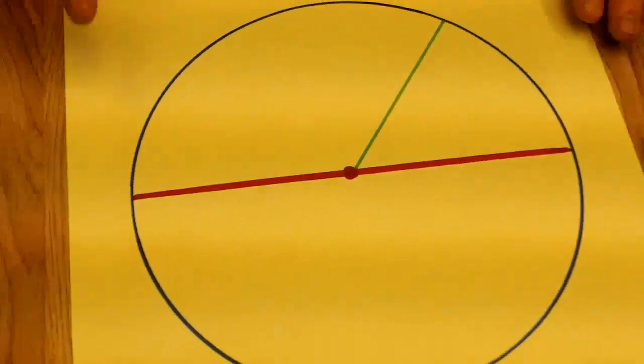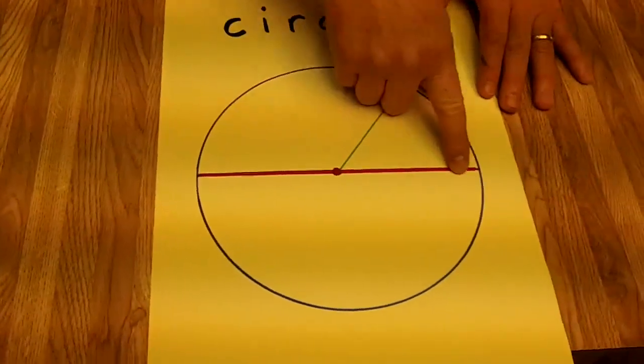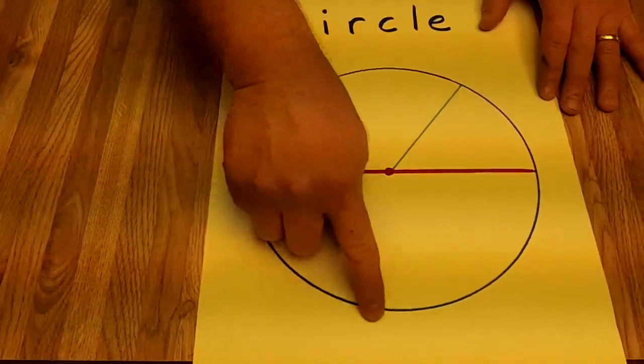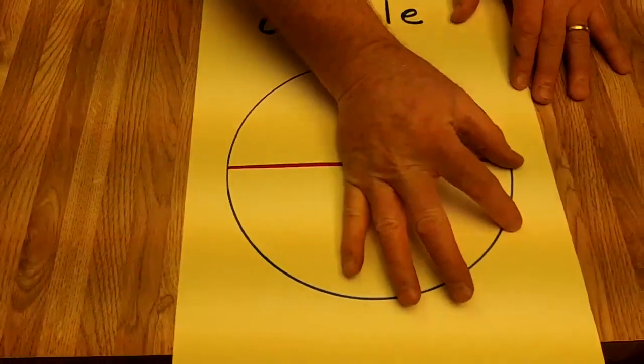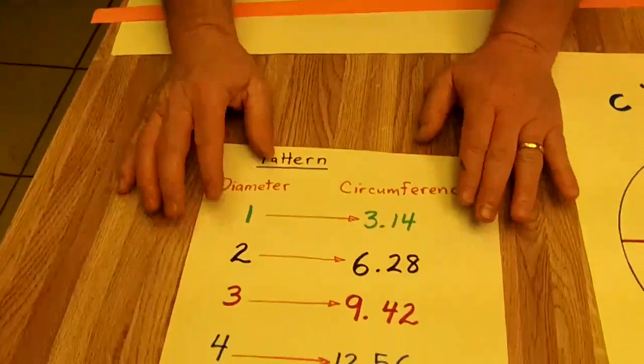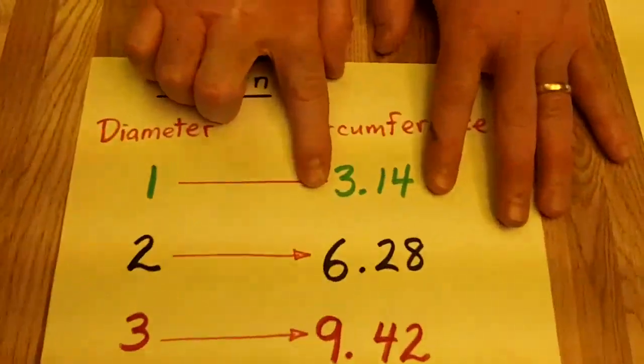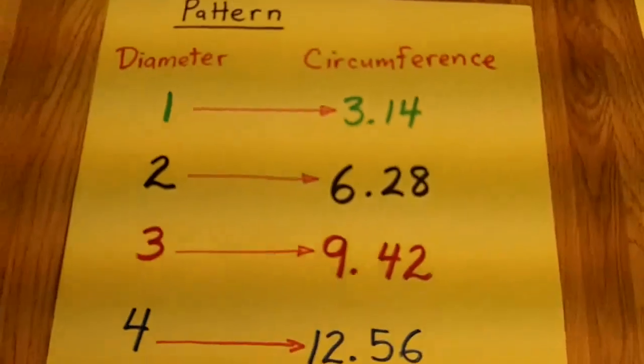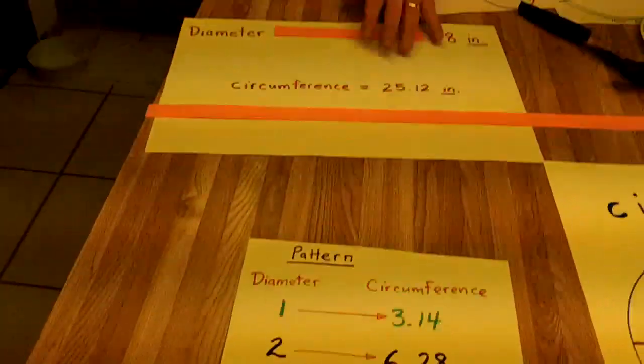So that Pi was always this proportion, where one diameter across was equal to three diameters and a little extra. And so, we call in decimal terms, Pi is 3.14. I hope that was a good introduction to circles, circumference, and Pi.